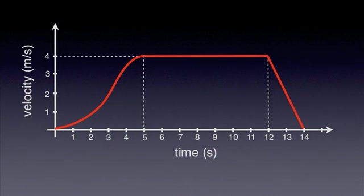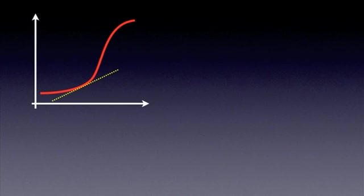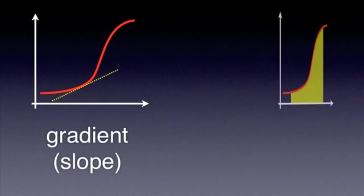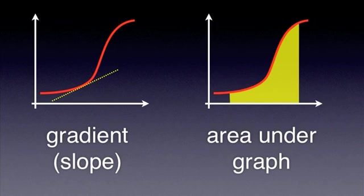First, a general point. When analyzing graphs of motion, we are often interested in two of their characteristics: the gradient of the graph and the area under the graph. For simplicity, our discussion is limited to one-dimensional motions, but the conclusions can be easily extrapolated to more general cases.